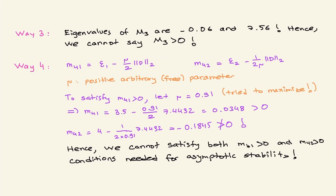For Way 3, recall I used the Frobenius norm instead of the matrix 2-norm, and the Frobenius norm is larger. When I check the eigenvalues of M3, one of them is negative, so M3 is not positive definite. Therefore, with Way 3 we cannot claim asymptotic stability. Comparing Ways 1, 2, and 3 on the same system: Ways 1 and 2 correctly confirm asymptotic stability, while Way 3 fails to do so — not because the system is unstable, but because the conservatism introduced by using the larger upper bound prevents satisfying the condition.